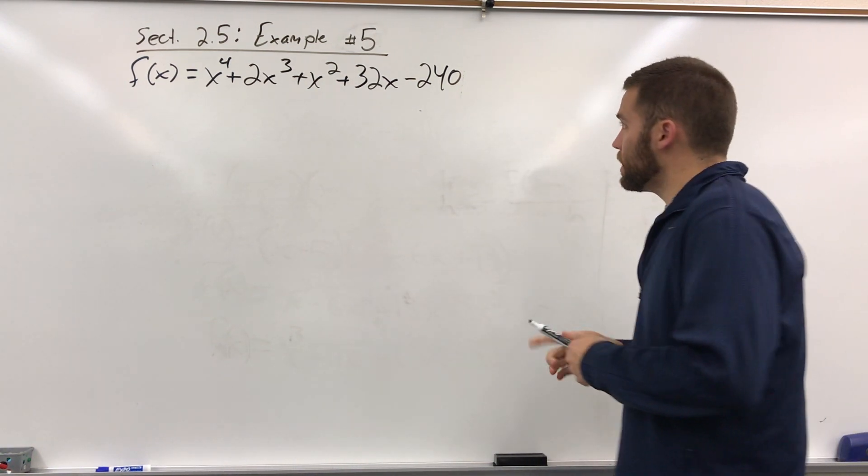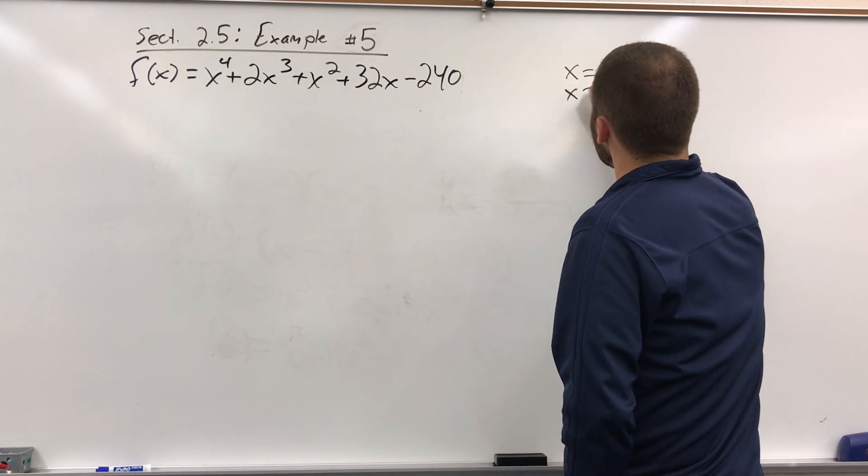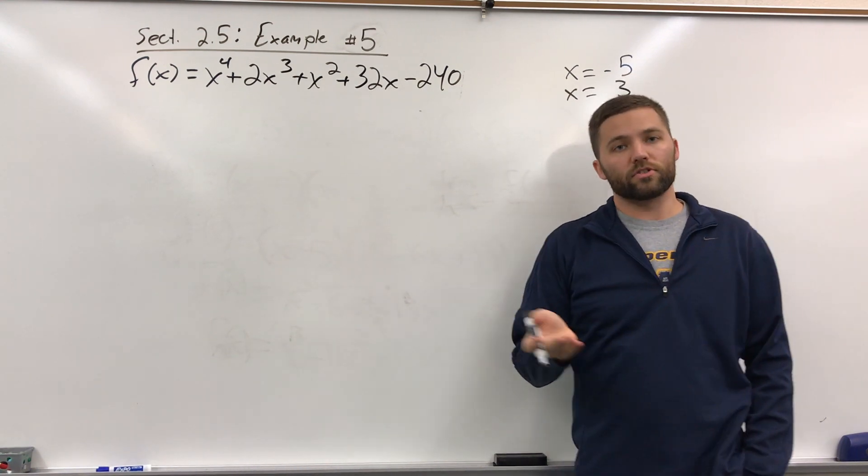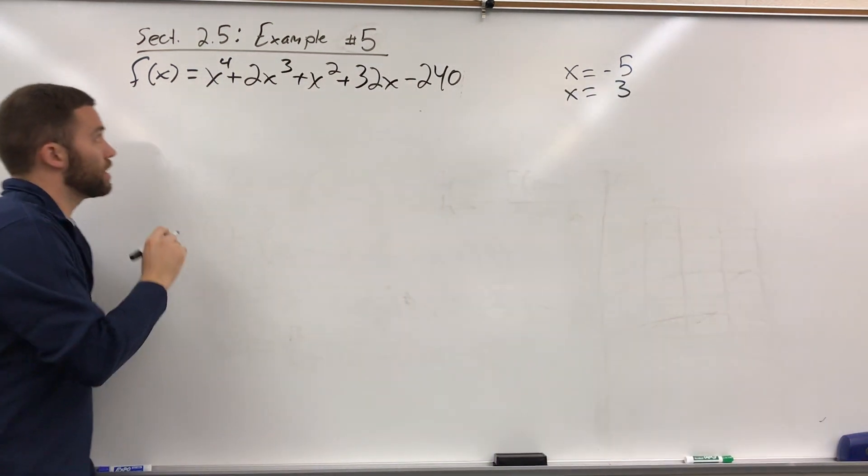So this one, when you graph it, you end up finding that x equals negative 5 and x equals 3 are easy zeros, are integer zeros. So we'll start off by dividing those numbers out or those factors out.